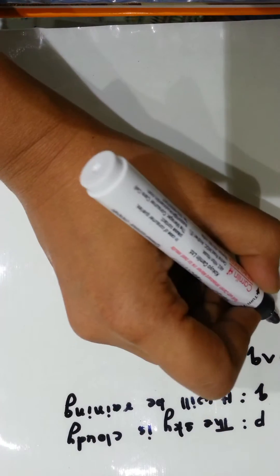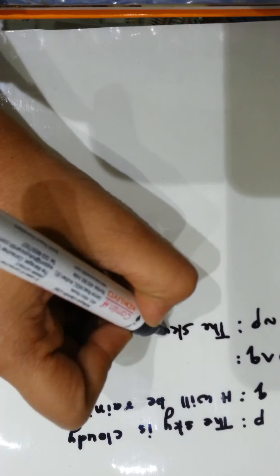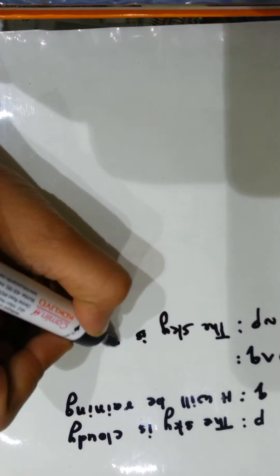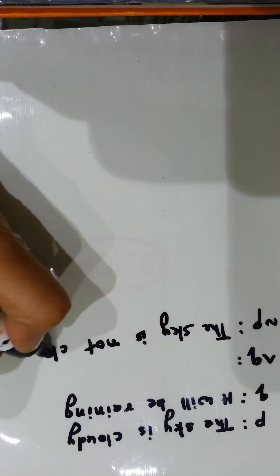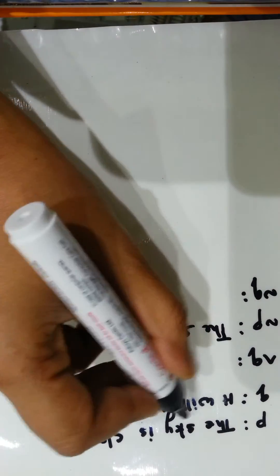Now we will see the negation P. What will be the negation P? 'The sky is not cloudy.' And what will be negation Q? 'It will not be raining'.